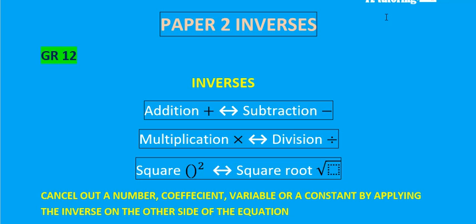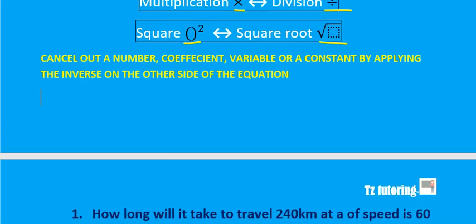Welcome GW12 to paper 2 inverses. Just to remind you of what we learned in paper 1: to cancel out a plus you apply the inverse of minus on the other side; to cancel out multiplication you divide on the other side; to cancel out a square, the inverse is a square root. Those are the three you need to know for your exam.